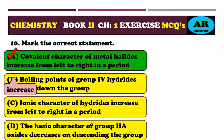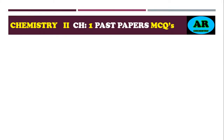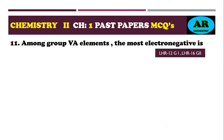Beta option is incorrect because boiling point of group 4A hydrides actually increases down the group. Charlie option is incorrect because ionic character of hydrides actually decreases from left to right. Delta option is incorrect because basic character of group 2A oxides increases on descending the group. So the correct option is alpha.